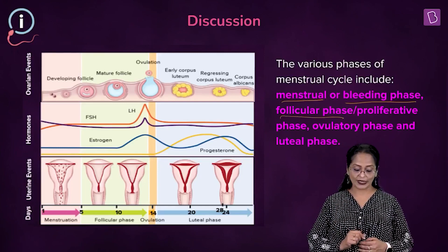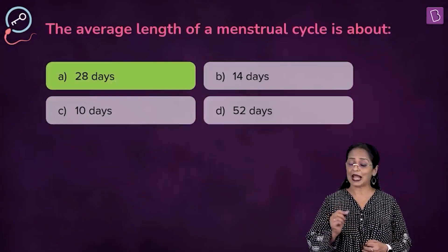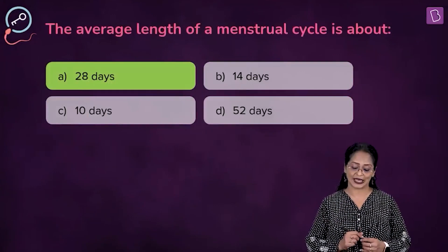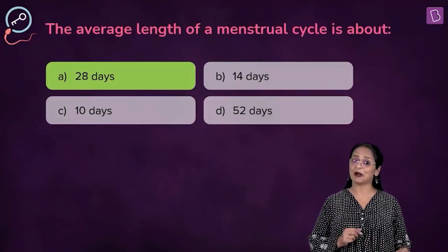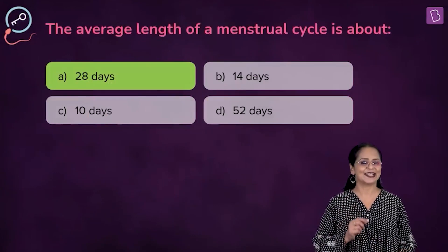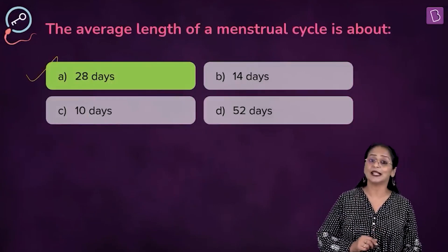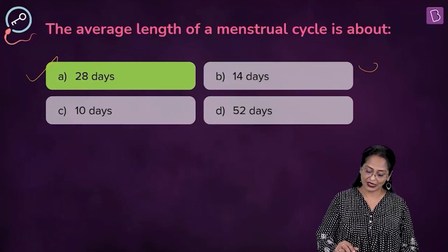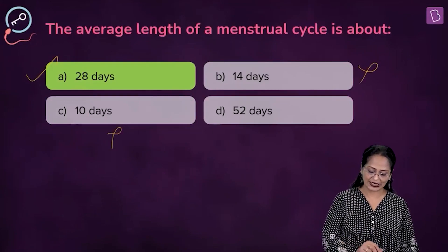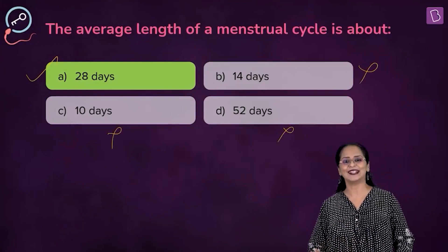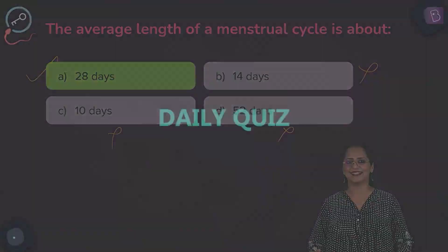For this question, the average length of a menstrual cycle is about? The answer is A — 28 days. You can eliminate B, C, and D. A is the right answer.